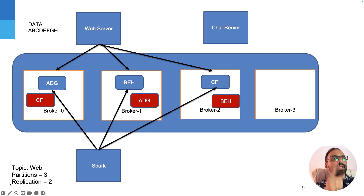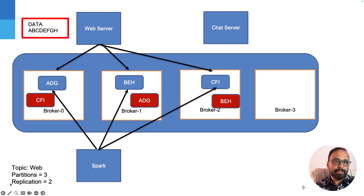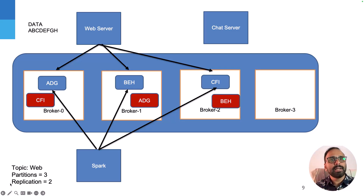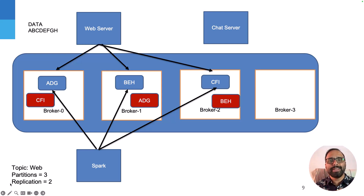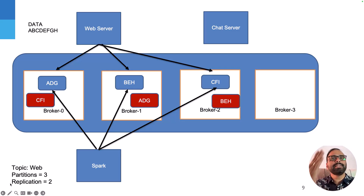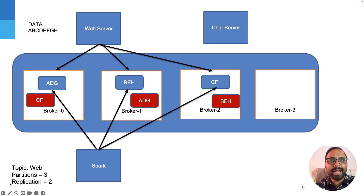Look at the picture now. The data the web server is sending is a, b, c, d, e, f, g, h, using brokers zero, one, and two. Look at the blue boxes — by default it works in a round-robin fashion. The producer sends message a to broker zero, b to broker one, c to broker two, then d to broker zero again, e to broker one, f to broker two, and so on. So broker zero ends up with a, d, g. The full message set is distributed among three brokers.